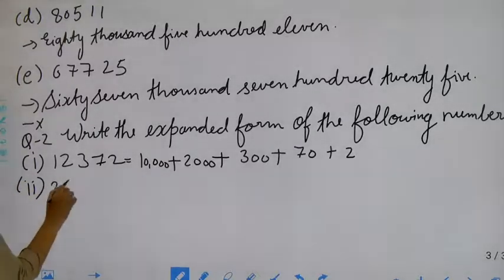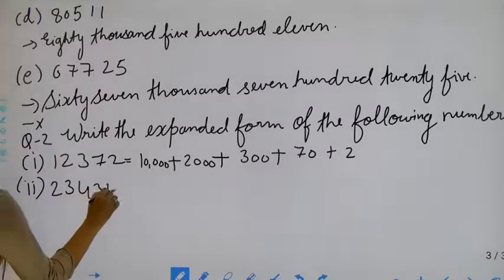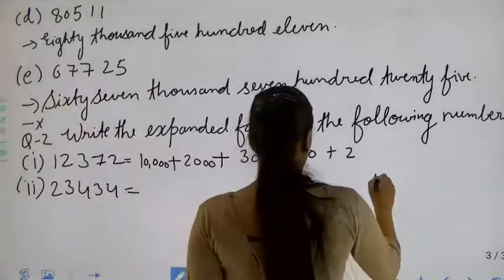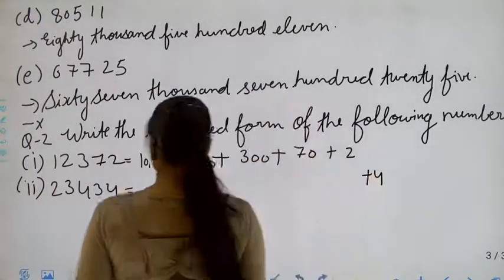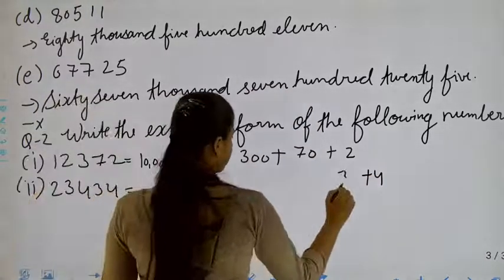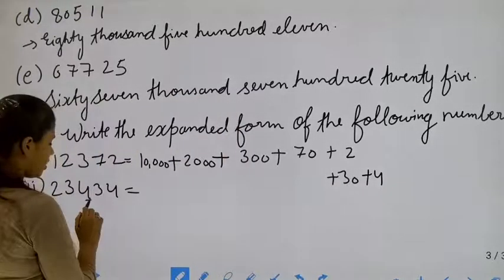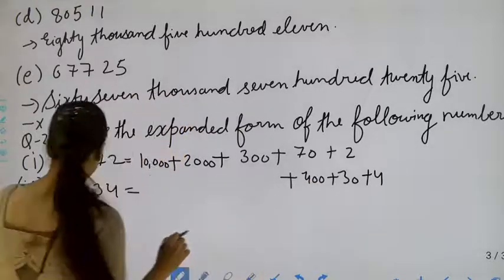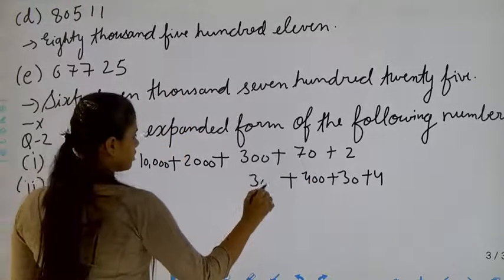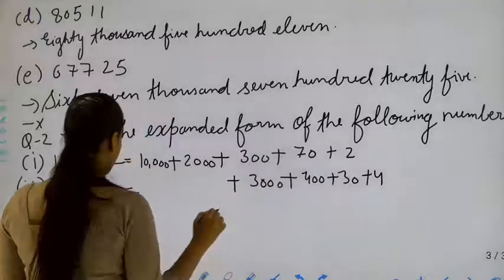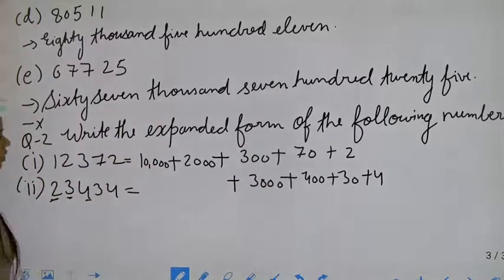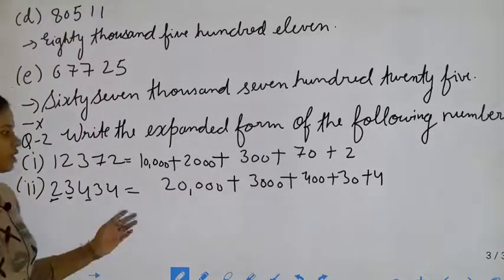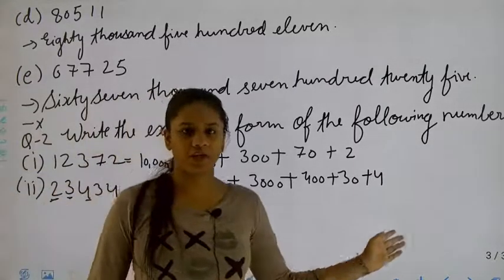Twenty-three thousand, four hundred thirty-four. Again, we have to start from the right-hand side — ones, tens, then hundreds, that is four hundred, then thousands, that is three thousand, and the last one, that is twenty thousand — it will be twenty-three thousand, four hundred thirty-four.